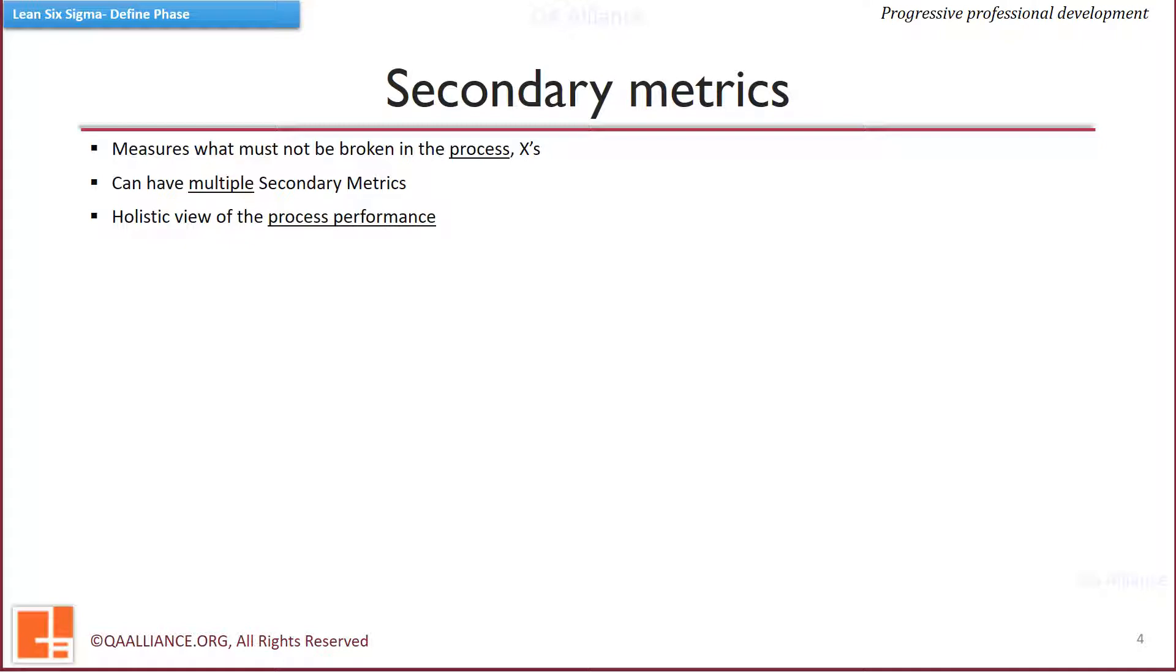The independent variables, Xs, can be used to track secondary metrics. Let us take the example of our cafe. If number of customers served per hour is the primary metric, waiters may start working inappropriately fast to maximize the primary metric. This will be detrimental to the business.